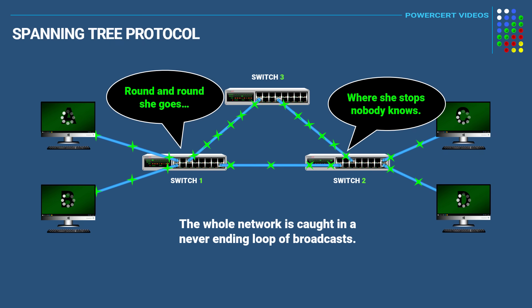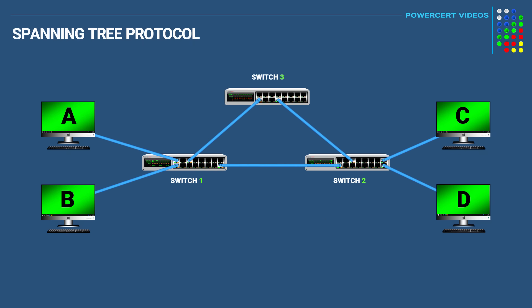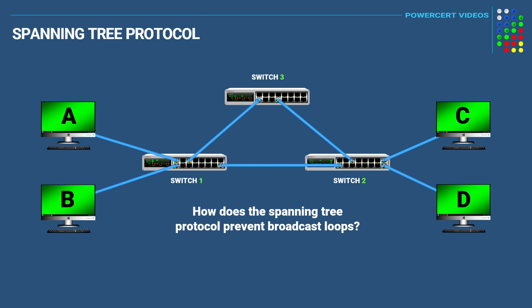STP was designed to prevent broadcast loops when multiple switches are used on a network. How does STP prevent this? The short answer is that it does this by blocking certain ports on the switches. The next question is: how does it determine which port or ports to block?